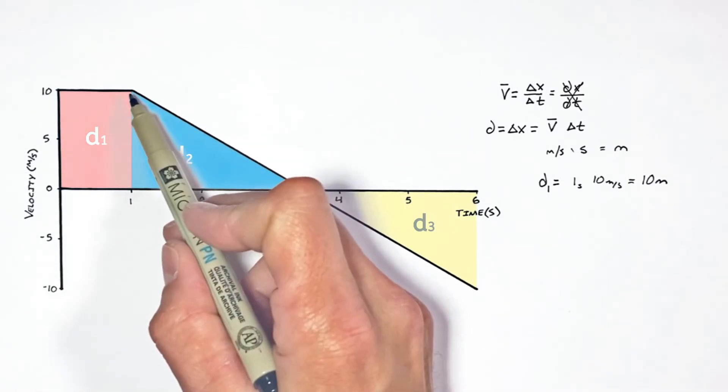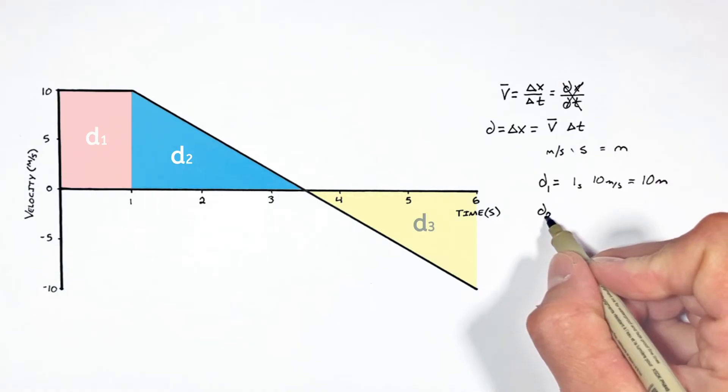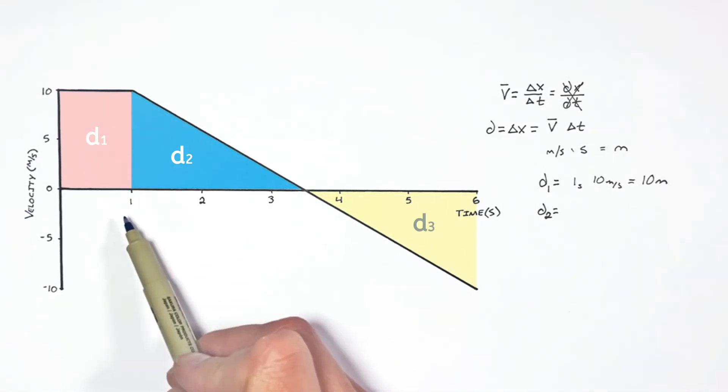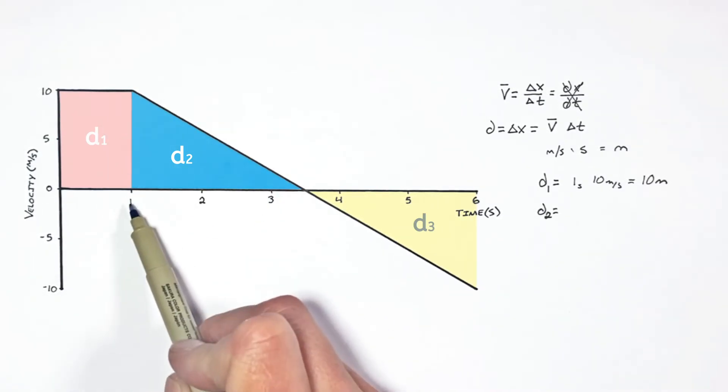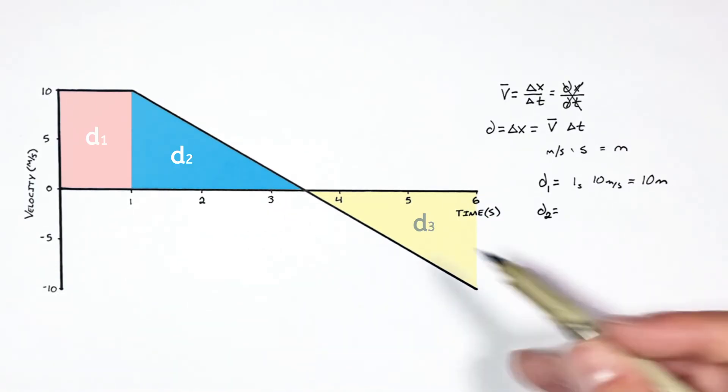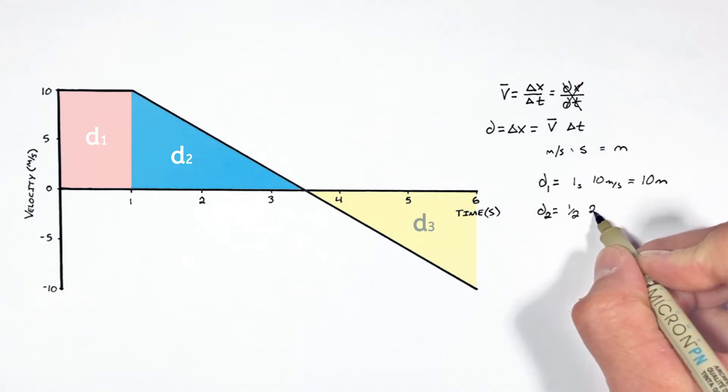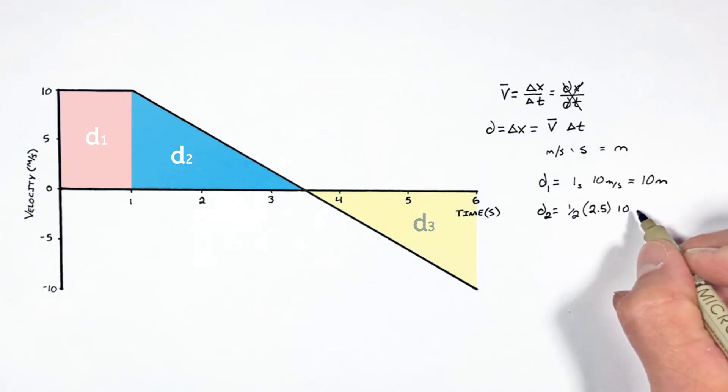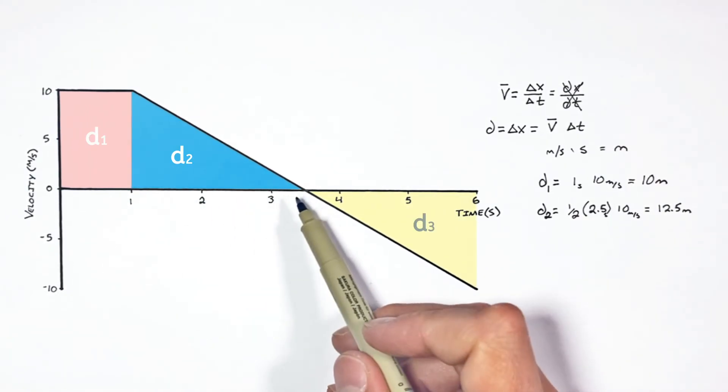In the second phase of motion, when the object is moving forward but slowing down, I'm going to call that D2 over that second phase is going to be equal to the area, not of a rectangle, but of this triangle. Now this triangle has a base that starts at a time of one second and goes to three and a half seconds. So, I'm going to have one half times the base, that is 2.5 seconds, multiplied by the height. That's 10. I'll put units on here. Now it leaves us with 12.5 meters. So in this second phase of motion, the object moves forward 12.5 meters.